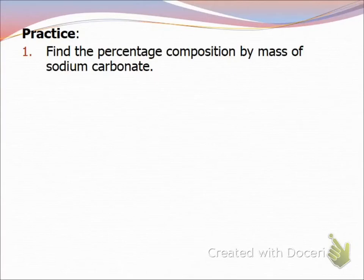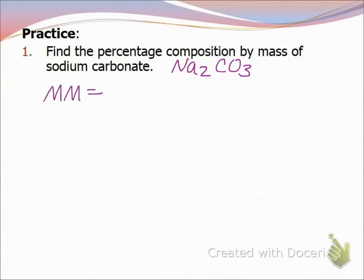This one says find percentage composition by mass of sodium carbonate. If it doesn't tell you a specific element, then you find for all the elements. First thing is I need to write the formula correctly. Sodium is +1, so it would be Na2CO3. Now we're going to find the molar mass. So we have 22.99 times 2 plus 12.01 plus 3 times 16, and I get 105.99.